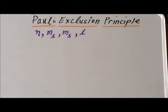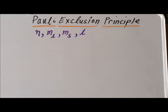Hello. In this video, we will prove the Pauli Exclusion Principle, which states that we cannot have two electrons with the same spin in the same orbital in the same atom.